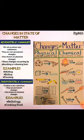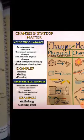Irreversible changes are also known as chemical changes. Examples include a boiled egg and cooking food.